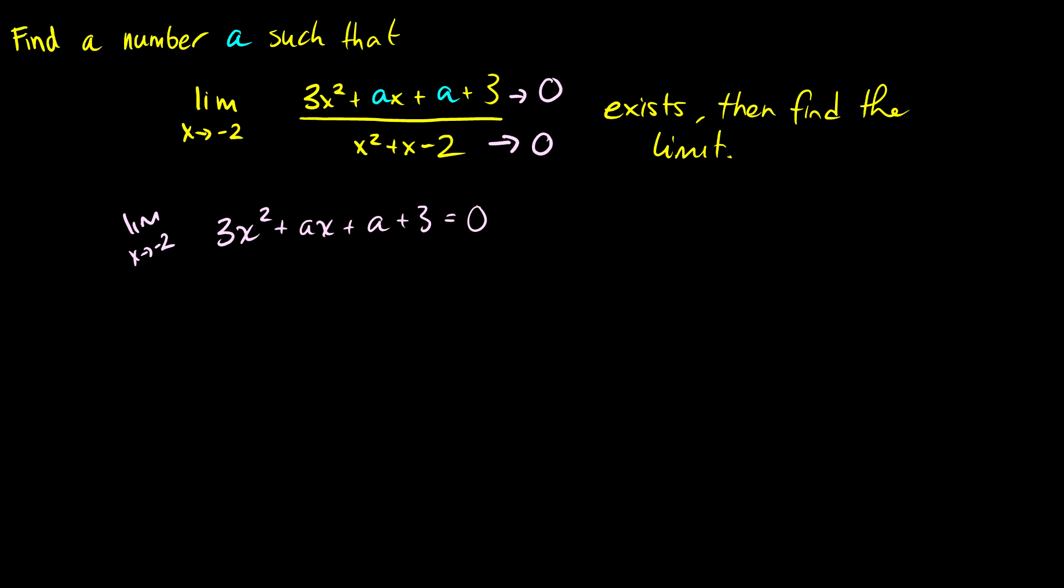So we plug in negative 2 for our x's here. We're going to get 3 times negative 2 squared which is 4 plus a times negative 2, this will be minus 2a plus a plus 3 is equal to 0. If we simplify this we're going to get 15 - a is equal to 0, so we're going to have a equal to 15.